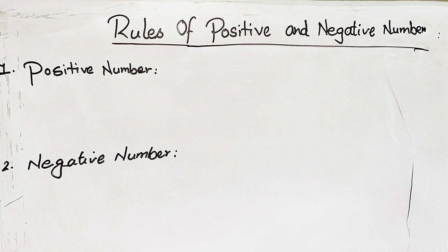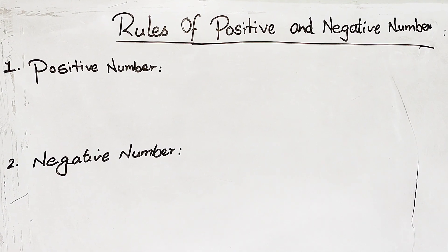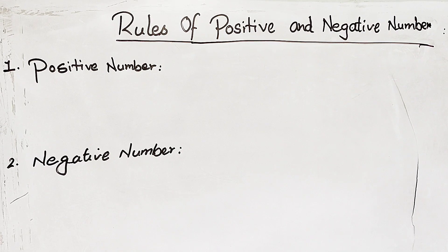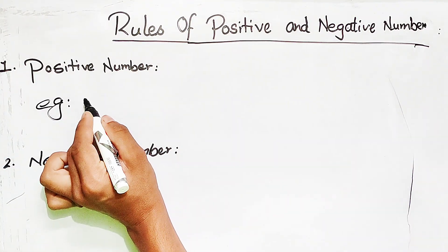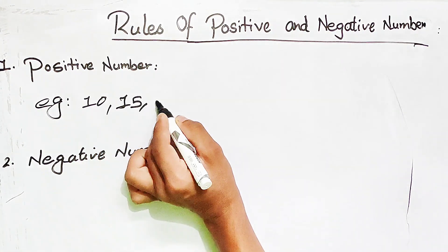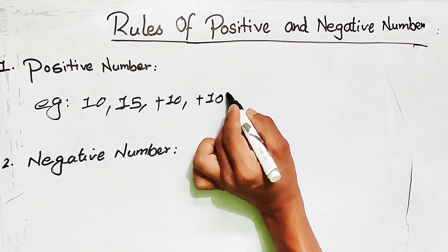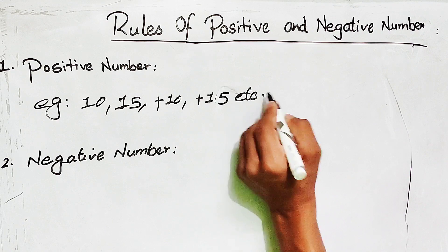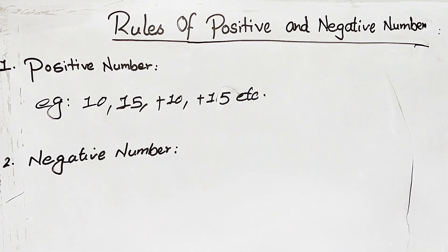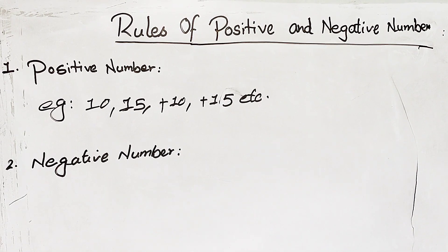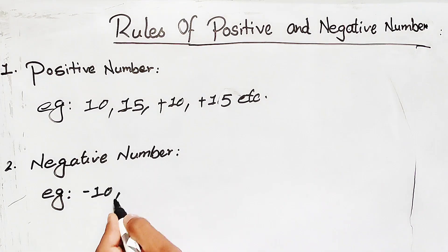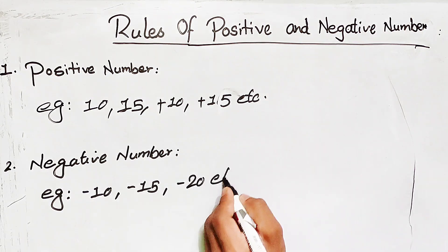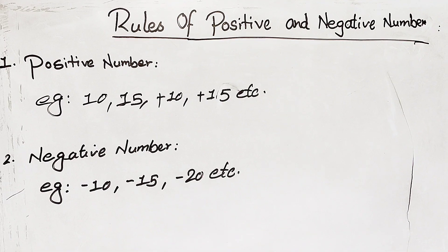This is the positive number and negative number. This is the real number. For example, positive numbers are 10 and 15. The negative number is the real number which includes 0 and 5, or it has a minus sign — for example, minus 10, minus 15, minus 20.